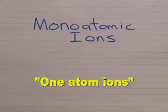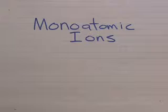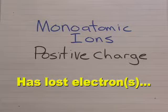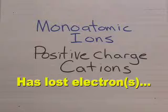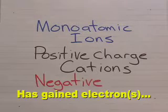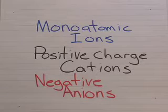While you scramble for your wallets, let's take a look at anions and cations. First of all, monatomic ions, or one-atom ions — the positive ones have lost at least one electron, and they're called cations. The negative ones have gained an electron from somewhere. These are anions.